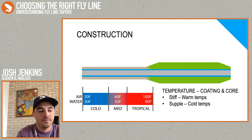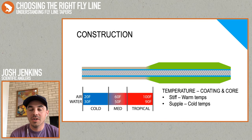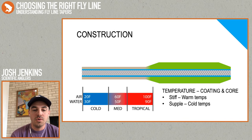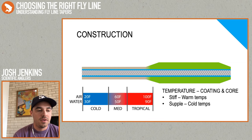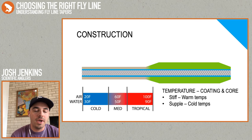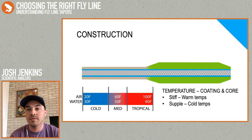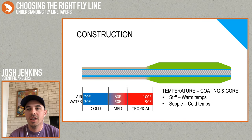The construction of the fly line is really what determines the ideal temperature that line is going to be used in. The combination of the core and the coating creates a line that is either pretty limp — good for cold water scenarios like trout fishing or spey fishing — or, if I use a rigid core and a rigid coating, I'd create a rigid fly line that would be better for tropical scenarios. Using some combination of rigid and soft components, I can get medium-temperature lines. The crossover for me is really about 70 degree air temperatures. Here in Michigan, in the middle of summer, I'll actually use a true tropical line for bass fishing. It's not to say a cold water line is completely relegated to freshwater; it all depends on the temperature you're fishing in.